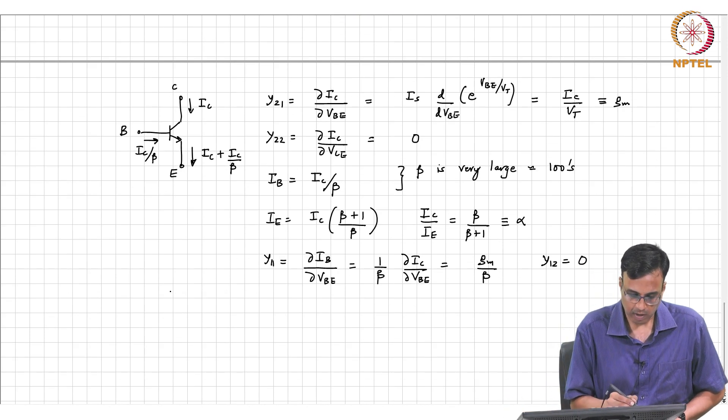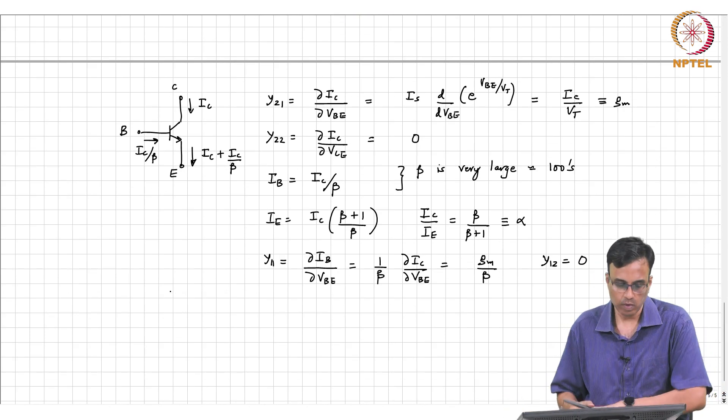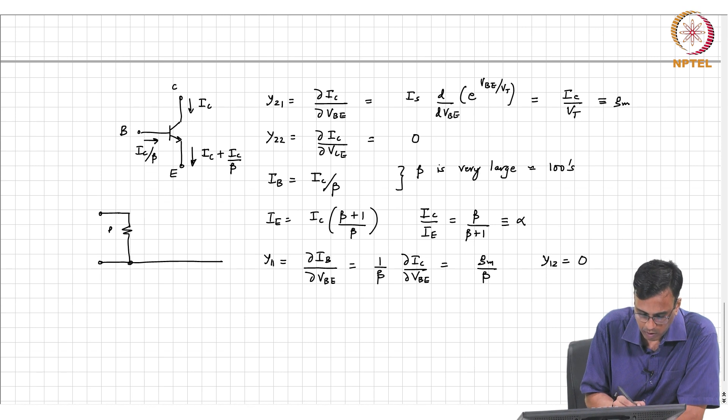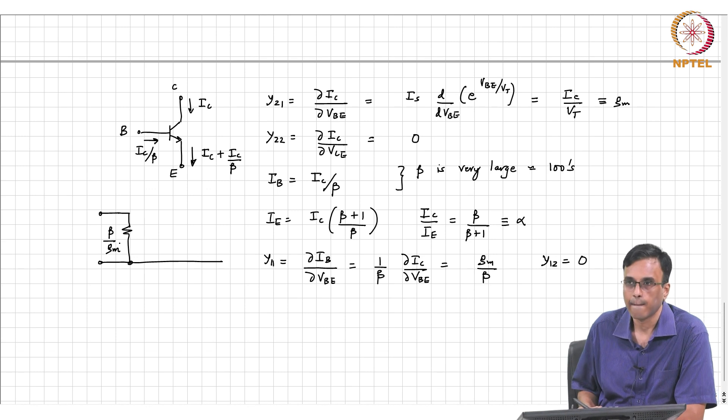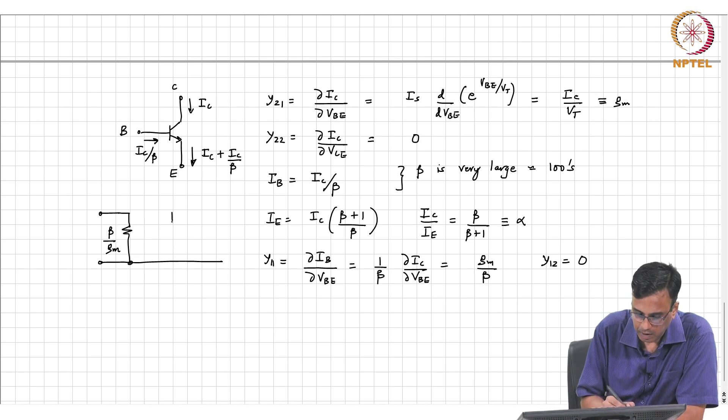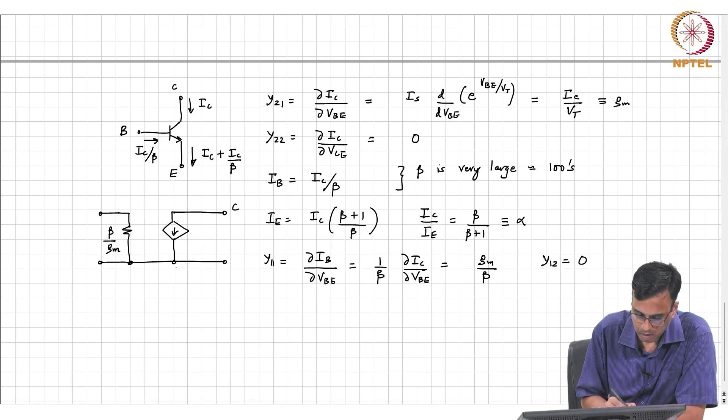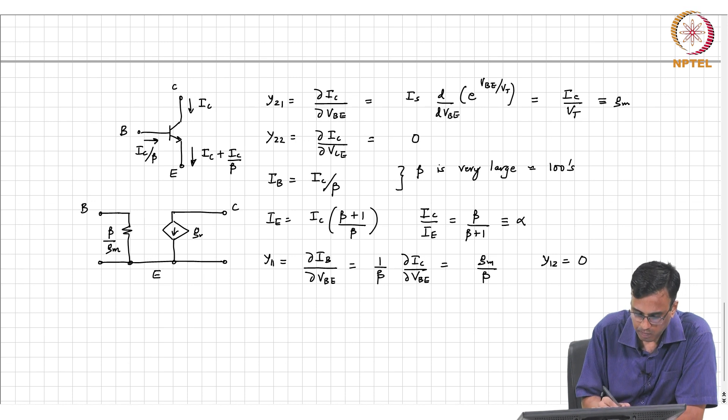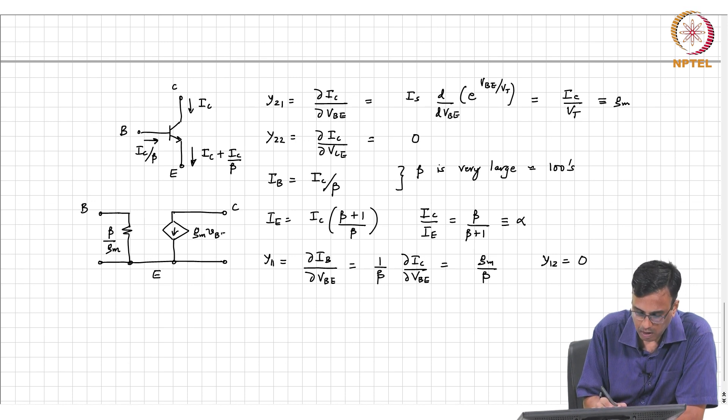The small signal equivalent of the bipolar transistor, therefore, you can see is Y11, which is a resistor of value beta over gm, and there is Gm VBE.